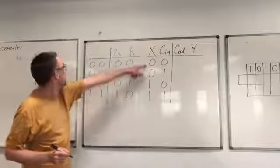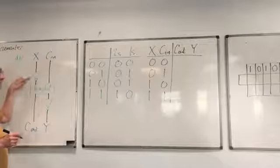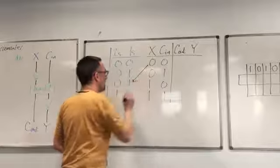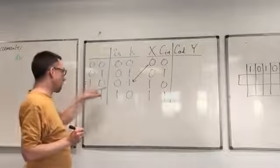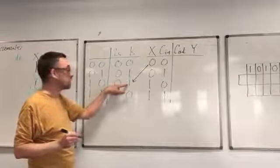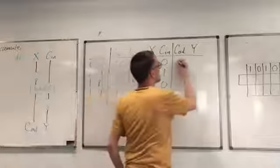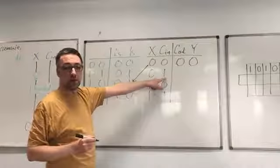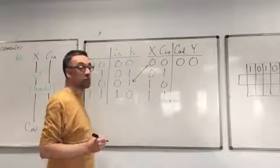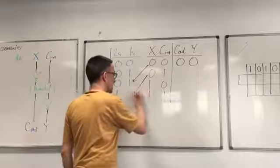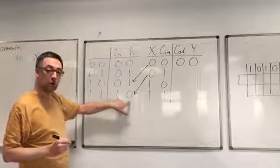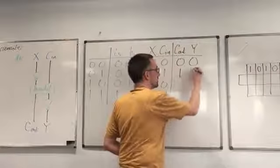If 0,0 comes into the decrementor, then the x signal gets negated, so 1,0 goes into the half adder. We're in this row of the truth table. Correspondingly, 0,1 comes out of the half adder, and then the 1 gets negated to give us 0,0. Meanwhile, if 0 and 1 go into the decrementor, the 0 gets negated and we find ourselves in this row of the truth table. 1,0 comes out of the half adder and then the 0 gets negated to give us 1,1.